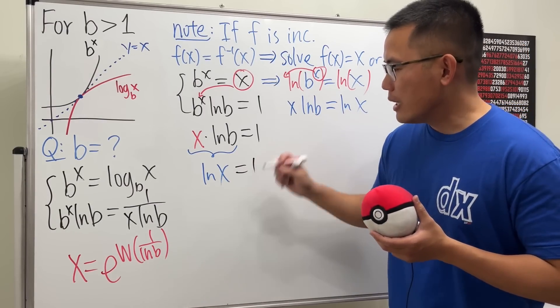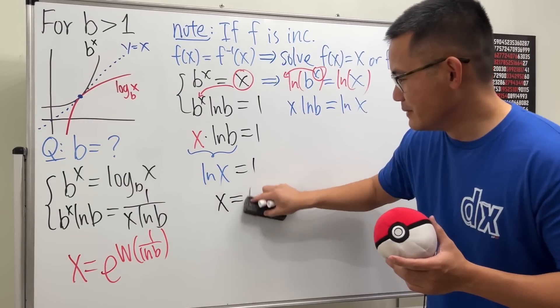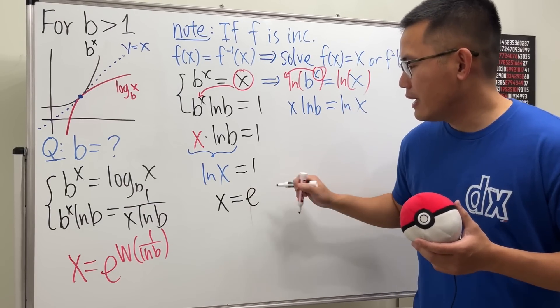So ladies and gentlemen, ln(x) equals 1, and of course just exponentiate both sides. We get x equals—no, just kidding—x equals e.